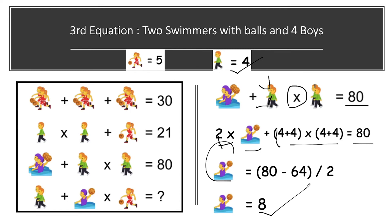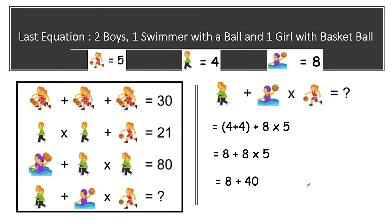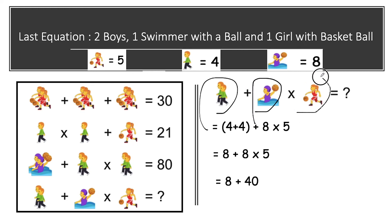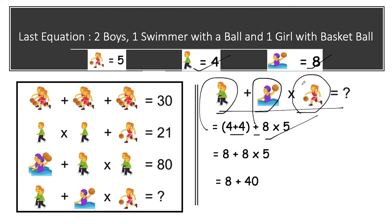From the third equation, one swimmer with a ball equals 8. Now jumping to our last equation: two boys plus one swimmer with a ball, times one girl with a basketball. We know the value of one boy is 4, so two boys gives 4 plus 4; swimmer value is 8; and girl playing with basketball is 5.